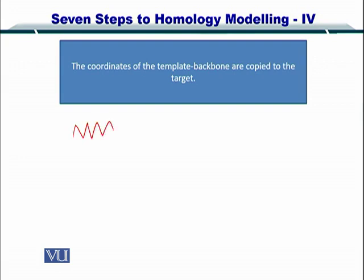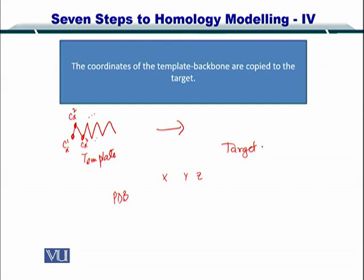Let's say here is your template and you want to use it to create a target. The PDB gives you the X, Y, and Z of each alpha carbon. So let's call this carbon alpha 1, carbon alpha 2, carbon alpha 3, and so on. You have alpha carbon 1 with its X, Y, and Z. Next, you have carbon alpha 2 with its coordinates. This information is in your PDB and you can have all the alpha carbons that are in the template's backbone.